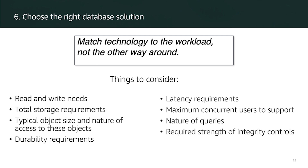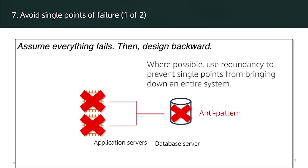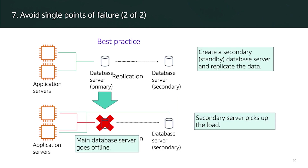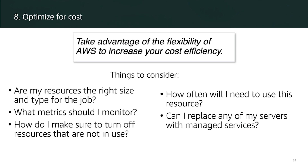A common way to avoid single points of failure is to create a secondary standby database server and replicate the data asynchronously. This way, if the main database server goes offline, the secondary server can pick up the load. Cloud computing allows you to trade capital expense for variable expense.